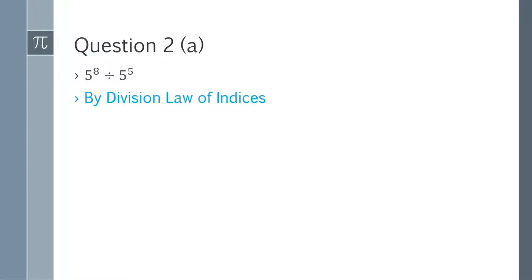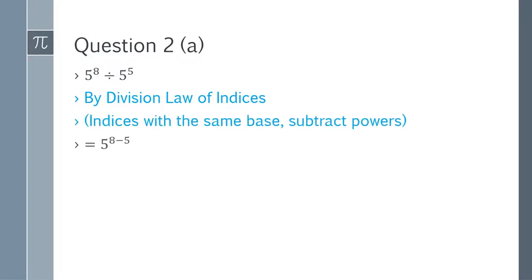By the law of indices, we subtract the powers if the base is the same. We take the common base 5 and subtract the powers: 8 minus 5 gives 5^3. That is the answer for question 2a.